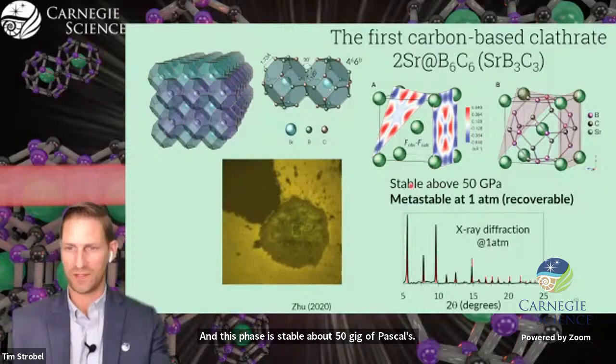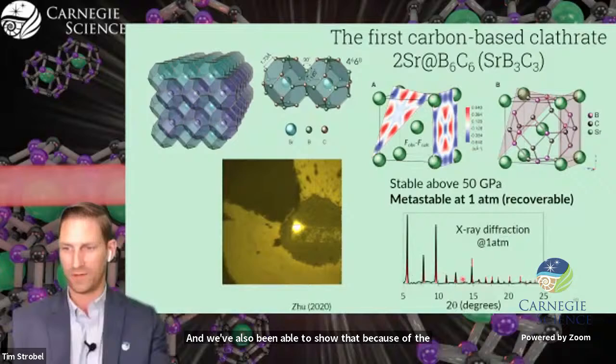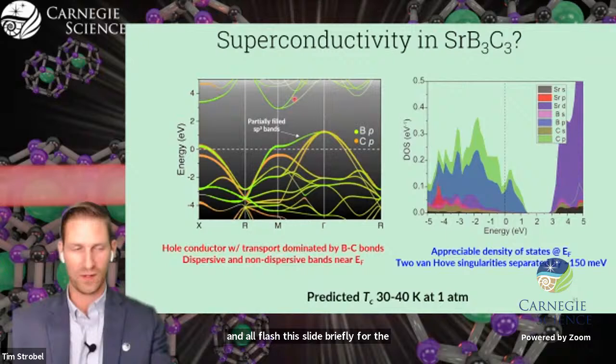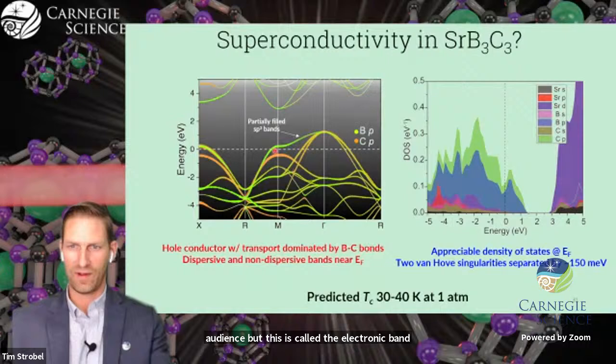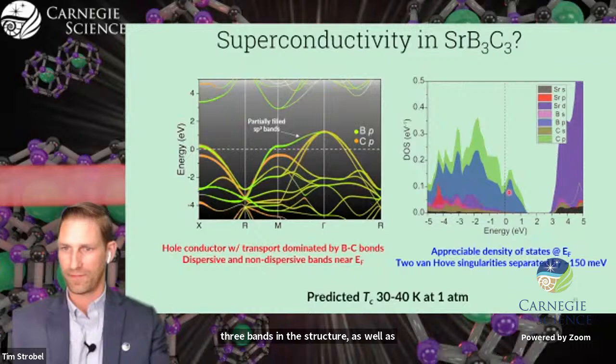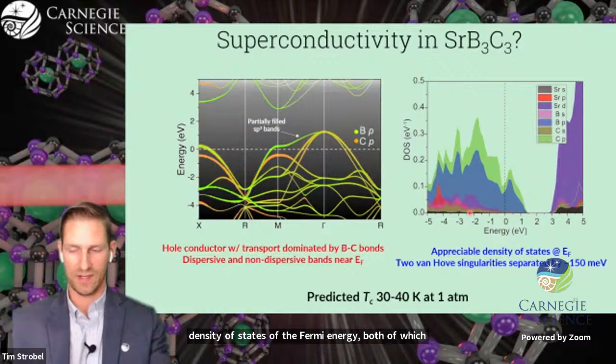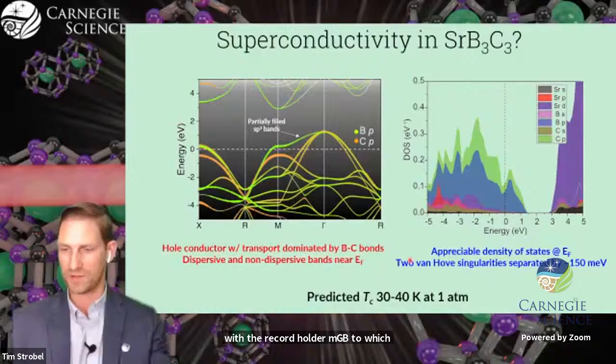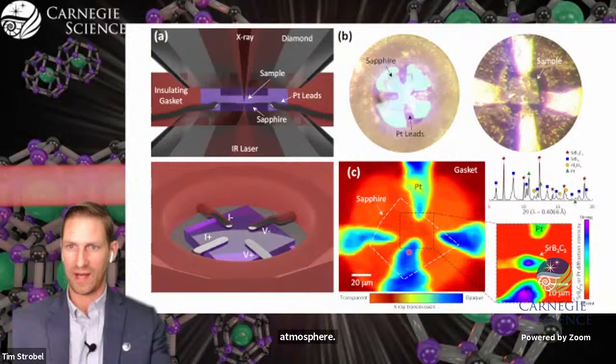We've been able to solve the crystallographic structure and this phase is stable above 50 gigapascals. We've also been able to show that because of the strong covalent bonds, we can recover this phase to one atmosphere. This shows a whole conductor with partially filled SP3 bands, as well as a moderate density of states at the Fermi energy, both of which suggest high-temperature superconductivity. We've calculated a range between 30 and 40 Kelvin at one atmosphere.